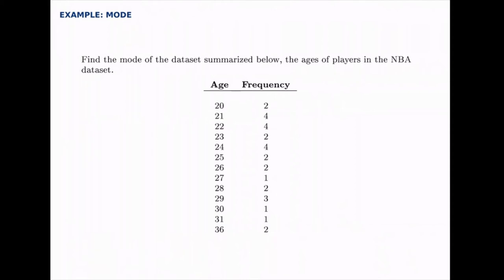Notice the highest frequency is four and occurs three times. There are three values which occur four times and are tied for most frequent, and those are 21, 22, and 24. So there are actually three modes, and this can happen a lot. In our case, the modes are 21, 22, and 24.